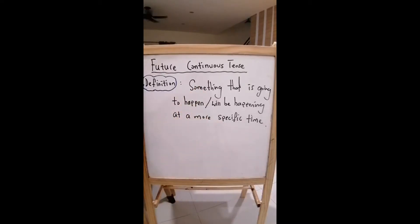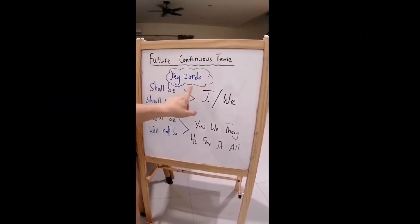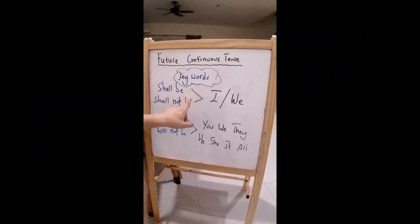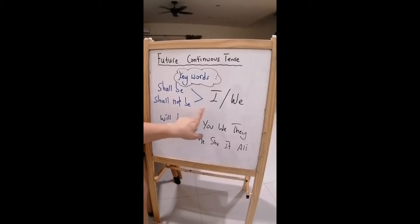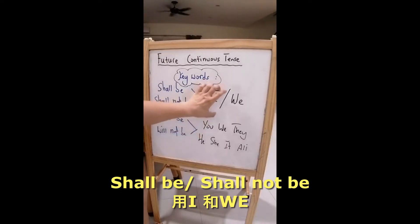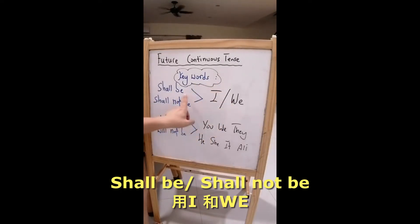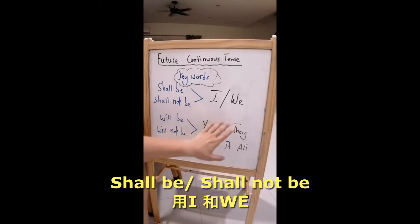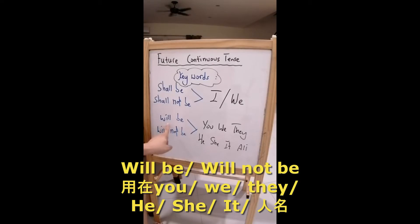某件事情即将会发生或是将会发生在一个更加明确的时间。关键字 'shall be' 和 'shall not be'. The same thing is we use 'I' or 'we' — 'I shall be', 'we shall not be', 等等等等. Now we look at how do we use 'will be' and 'will not be'.